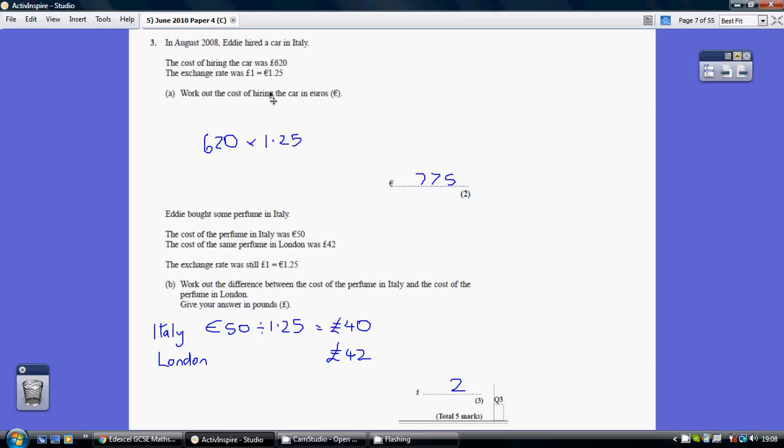So we're trying to translate from pounds to euros. Now can you see the euros is a bigger number? Pounds to euros, we need a bigger number. So how do we get a bigger number with 1.25? Well, we multiply by 1.25, giving us 775.